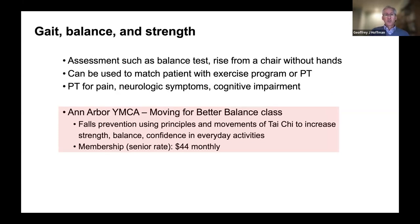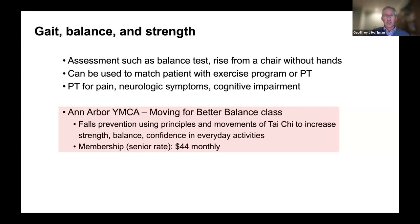Gait, balance, and strength are absolutely critical for preventing falls. Balance tests such as rising from a chair without your hands can be used to match a patient with a specific exercise program or physical therapist. The YMCA has a class called Moving for Better Balance, which works on fall prevention using principles and movements of Tai Chi, available through a membership with a senior rate.